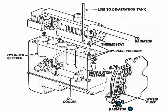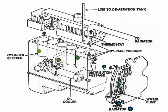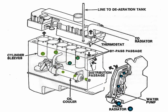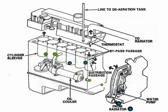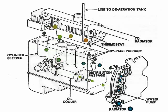Coolant flows from the bottom of the radiator into the water pump. The impeller of the water pump pushes the coolant through the front cover passage and out to the block. An internal passageway in the block directs the coolant from the front to the rear and to the oil cooler via an exterior tube. The angle at which the coolant is directed to the cylinder sleeves creates an upward swirling motion toward the cylinder head.